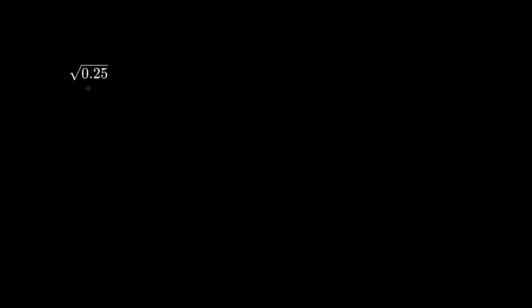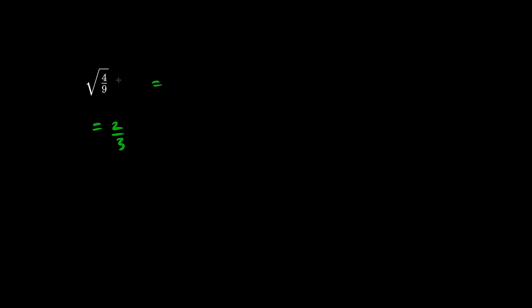What times what is the inside of this radical? It's 0.5 — 0.5 times 0.5 is 0.25. What is the square root of 4 ninths? What times what becomes the inside? The answer is 2 thirds. By the way, the square root of a fraction is the same as the square root of the top over the square root of the bottom, so clearly the answer is 2 thirds.